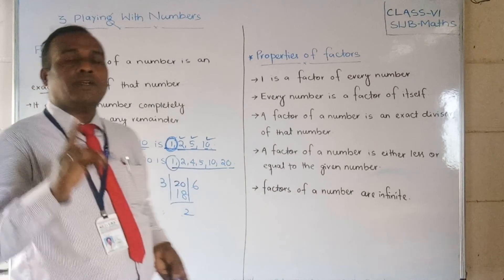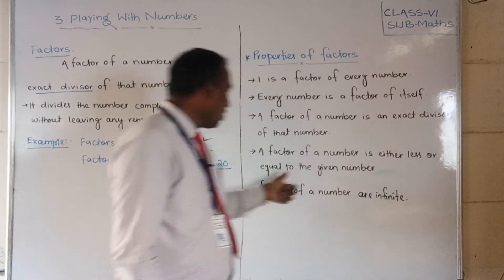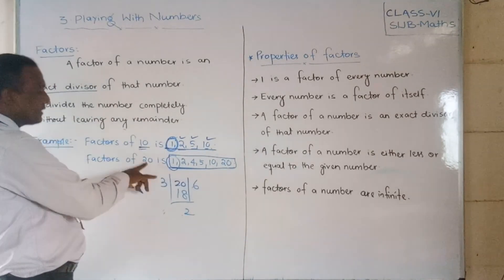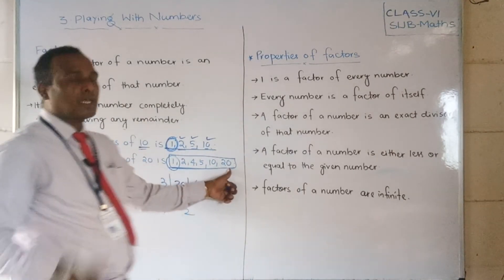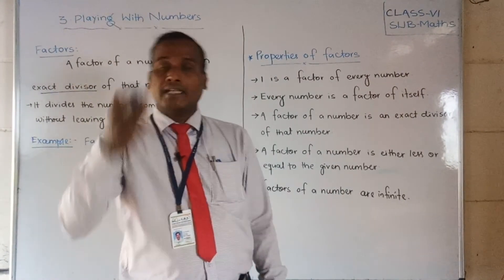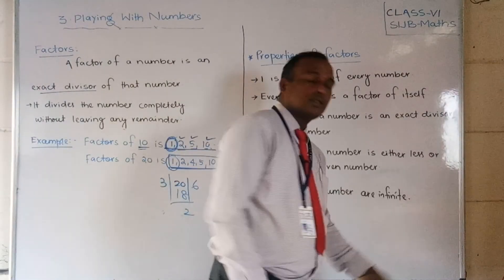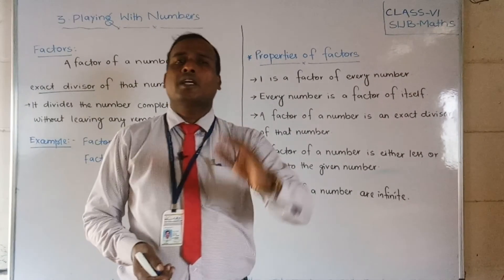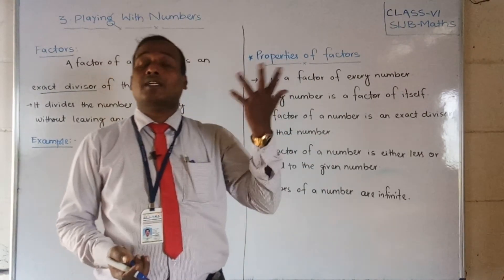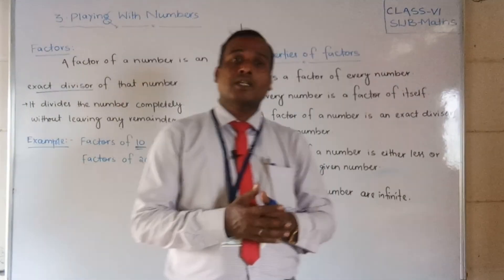Property 4: A factor of a number is either less than or equal to the given number — no factor can be greater than the number itself. Property 5: The factors of a number are finite — there are a limited number of factors for any given number, unlike multiples which are infinite. I hope you have understood what factors are and their properties.